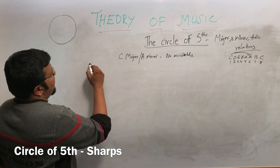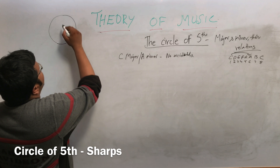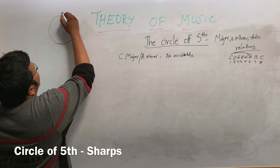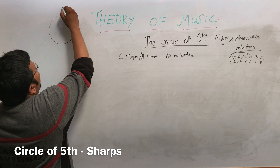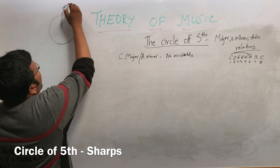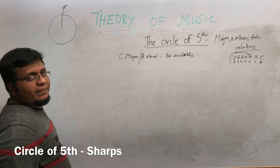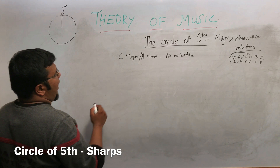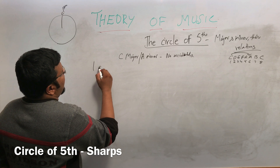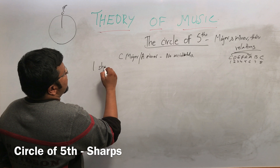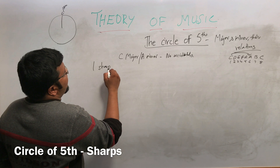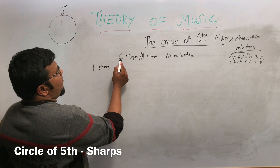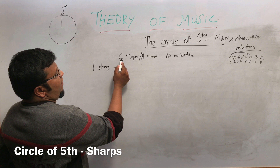This is called the C key, and the relative minor is called A minor. Now I am going to teach the one-sharp scale. The one-sharp scale is extracted from C major.